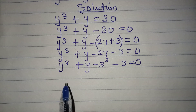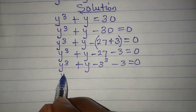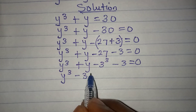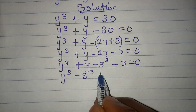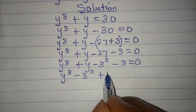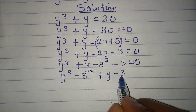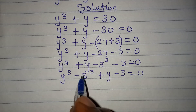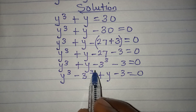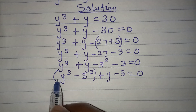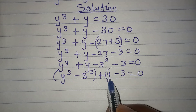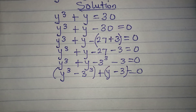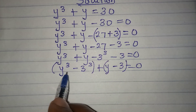From this point, collect terms together: y to the power of 3 minus 3 to the power of 3, then plus y minus 3, equals zero. We can group this into two groups and deal with it.